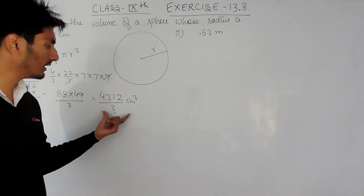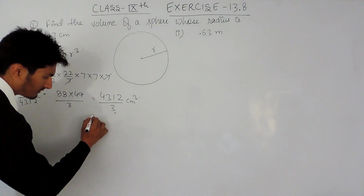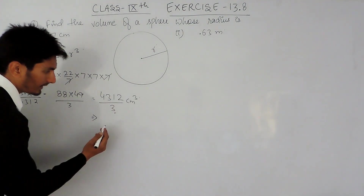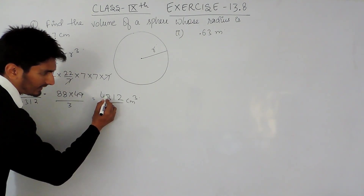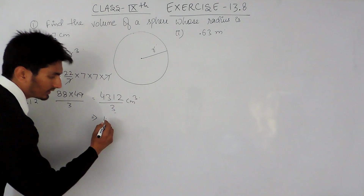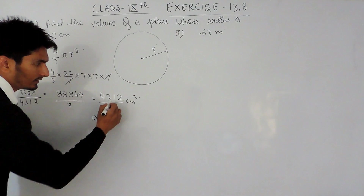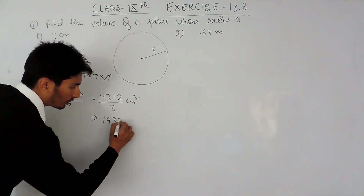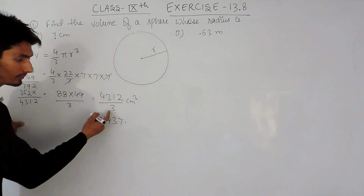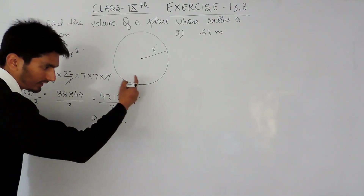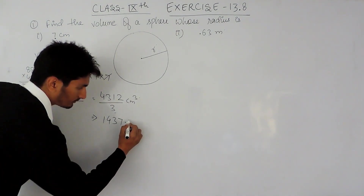You can also convert this into a mixed fraction. 4312 divided by 3: 4 divided by 3 is 1 remainder 1, bring down 3 — 13 divided by 3 is 4 remainder 1, bring down 1 — 11 divided by 3 is 3 remainder 2, bring down 2 — 21 divided by 3 is 7. Bringing down the remaining 1, we place a decimal and get 10.